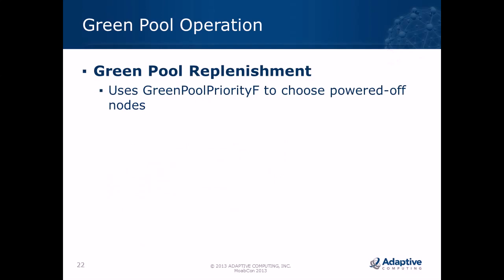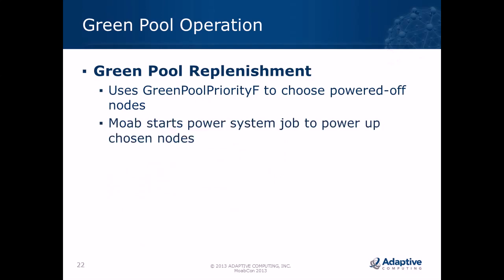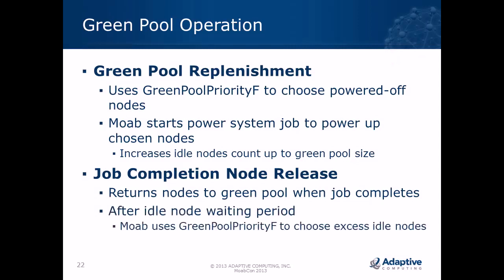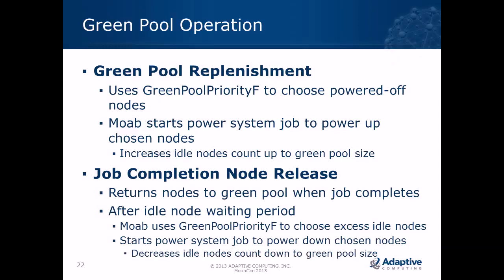For green pool replenishment, Moab uses the green pool priority F to choose powered-off nodes and starts a system job to power them up, bringing the idle node count back to the target. When jobs complete and release nodes, those nodes return to the green pool. After a configurable idle time wait threshold, Moab uses the green pool priority F function to choose which excess idle nodes to power down and starts a power system job, decreasing the idle node count back to the green pool size.